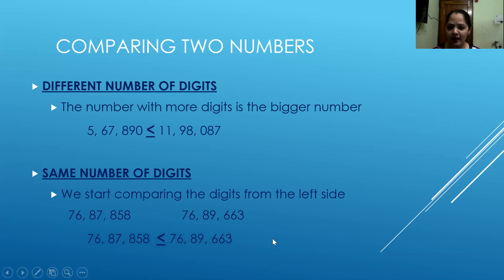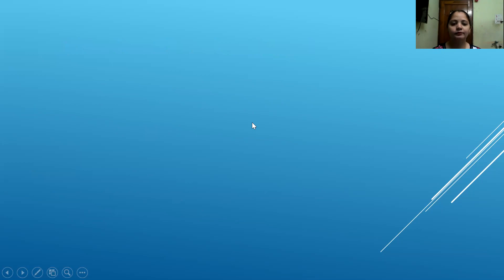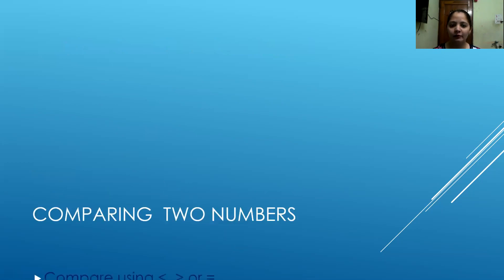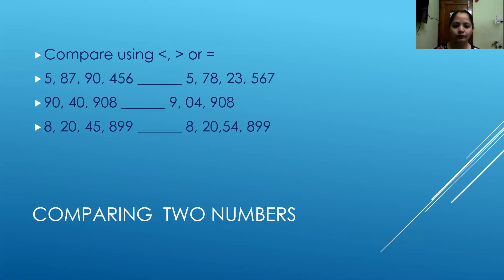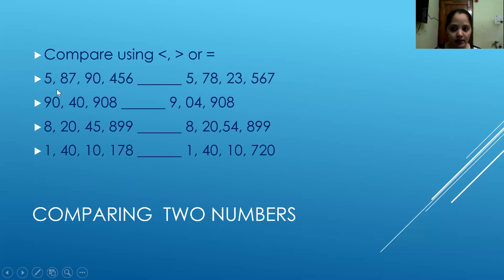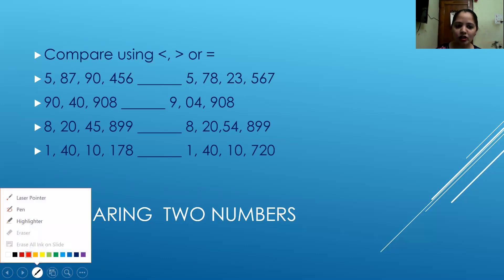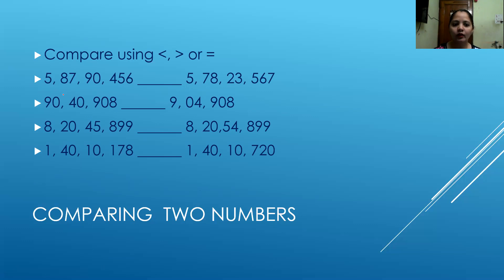Now let's have a look at some more examples to understand this. Here I have a few more quick examples where you have to compare using different symbols. The number of digits are the same in the first part, so I will start comparing digit by digit. The first digit is five — same. The second digit is eight in the first number, and seven in the second number. So my first number is the greater number.